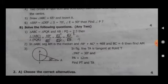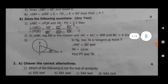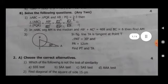B, solve the following questions, any two. For marks at 4. First, triangle ABC is similar to triangle PQR and AB to PQ is equal to 2 to 3, then area of triangle ABC upon triangle PQR is equal to AB square upon, complete the activity. Second, in triangle ABC, seg AM is equal to 468 and BC is equal to 6, then find AM.